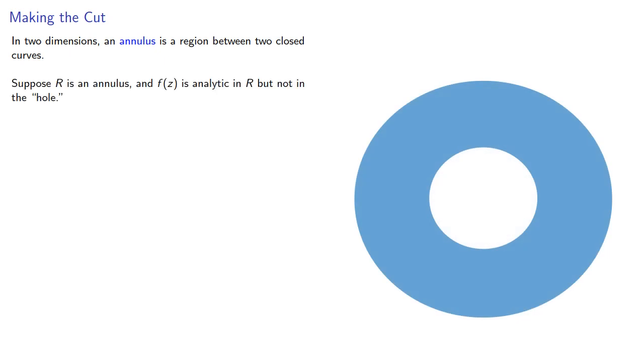Suppose R is an annulus and f(z) is analytic in R but not in the hole. What do we know about our contour integral for a simple closed curve in R?